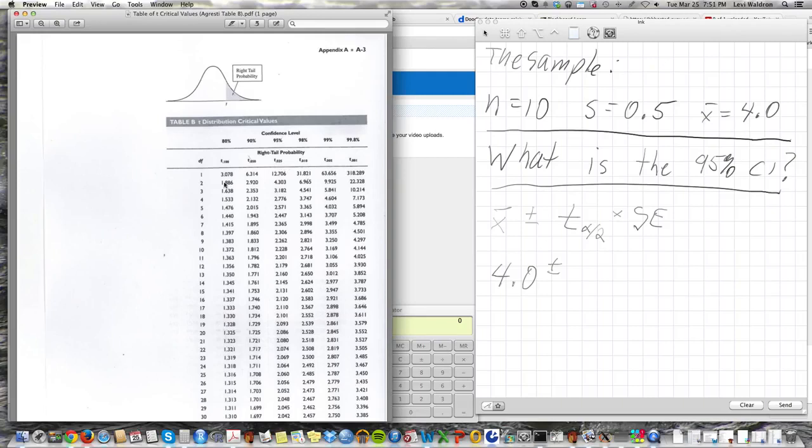Now, we need to know the degrees of freedom. Since n is 10, the degrees of freedom is n minus 1. Degrees of freedom equals 9, so I'm going to look under this 95% column until I get to 9 degrees of freedom, which is 2.262.